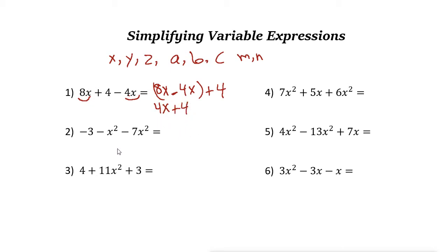Let's take a look at the next example. We have -3 - x² - 7x². X² here means x times x. So x², negative x² or minus x², minus 7x² - these two are like terms, so we can combine them. It is actually -3 + (-x² - 7x²). Now if you combine these two, negative 1 and negative 7 is negative 8.